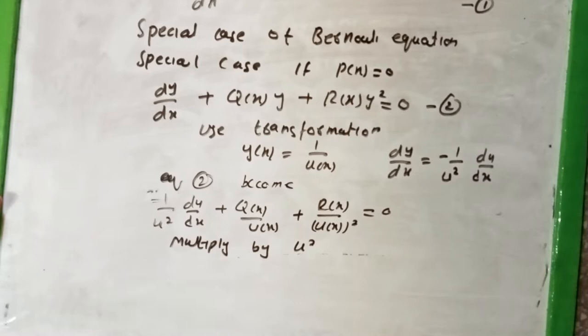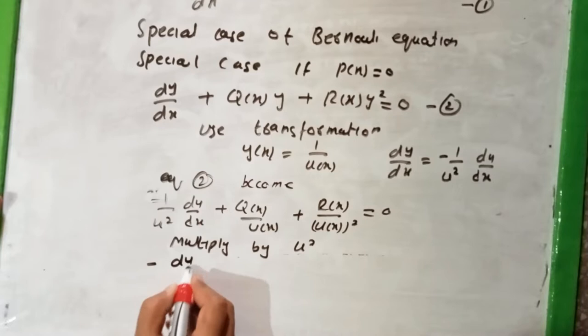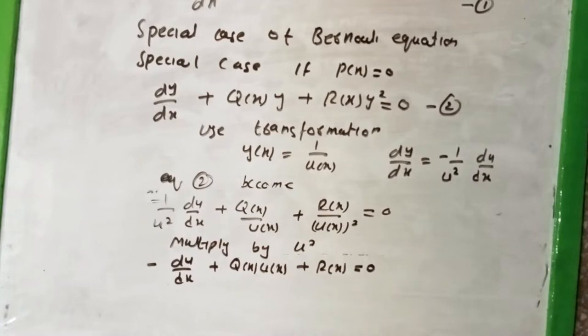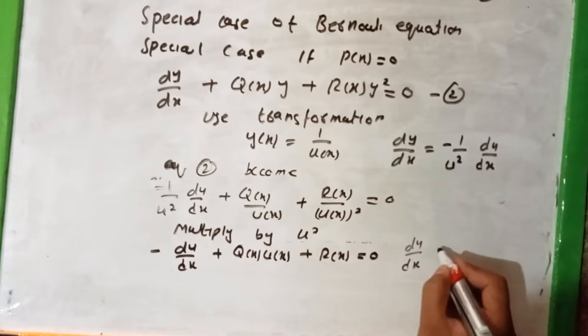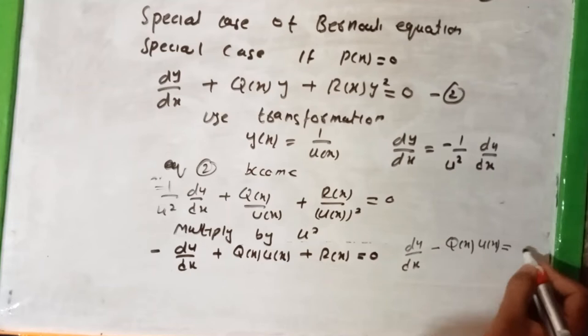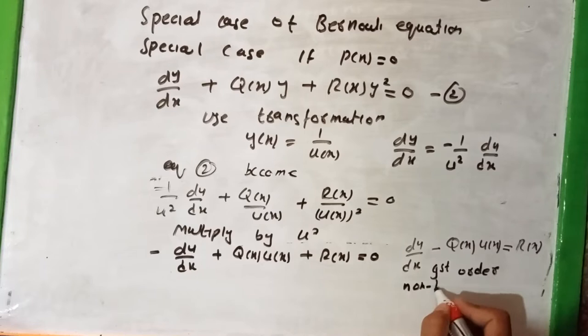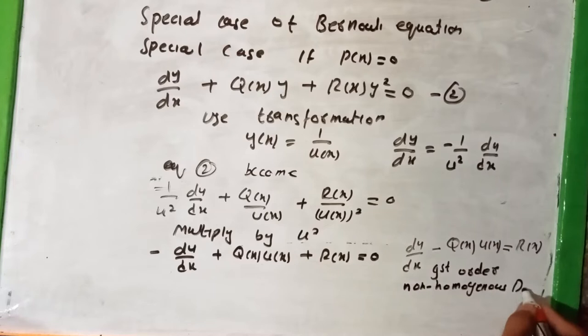Multiplying through by u², this becomes du/dx plus q(x)u(x) plus r(x) equal to 0, which rearranges to du/dx minus q(x)u(x) equal to r(x). This is a first order non-homogeneous differential equation.